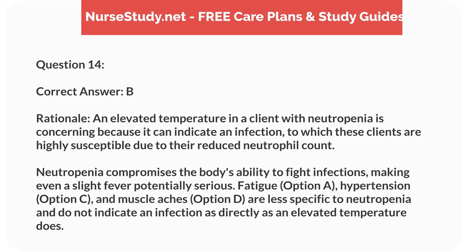Correct answer: B. Rationale: an elevated temperature in a client with neutropenia is concerning because it can indicate an infection, to which these clients are highly susceptible due to their reduced neutrophil count. Neutropenia compromises the body's ability to fight infections, making even a slight fever potentially serious. Fatigue, option A, hypertension, option C, and muscle aches, option D, are less specific to neutropenia and do not indicate an infection as directly as an elevated temperature does.